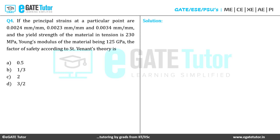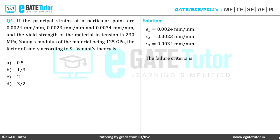The principal strains are ε₁ = 0.0024, ε₂ = 0.0023, and ε₃ = 0.0034 mm/mm. According to Saint-Venant's theory, the maximum principal strain must reach the yield point of the standard specimen. Among the three, ε₃ = 0.0034 is the highest. Therefore, the failure criteria is ε₃ ≥ ε_y. Applying simple Hooke's law with FOS: 0.0034 ≥ σ_yt / (E × FOS).